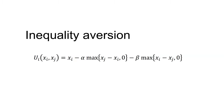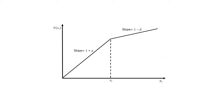We could also set beta less than zero for an agent that likes to be better off than others. This utility function has a kink at XJ, where agent I moves from having less to more than agent J. If beta lies between zero and one, the utility of agent I continues to increase in XI above XJ, but at a decreasing rate as inequality degrades the benefit of having more.